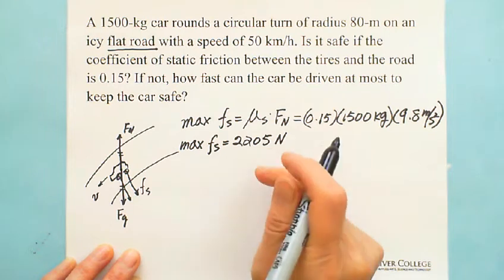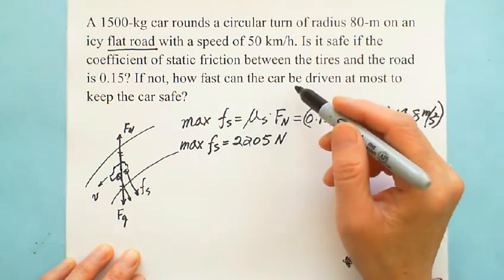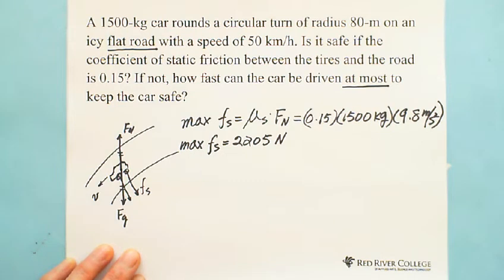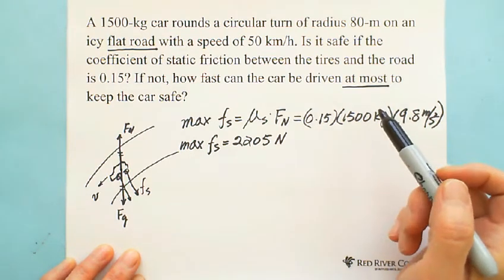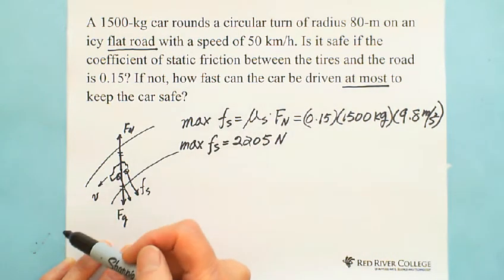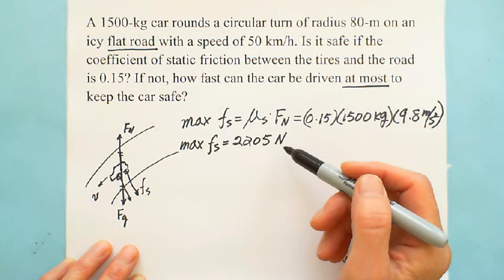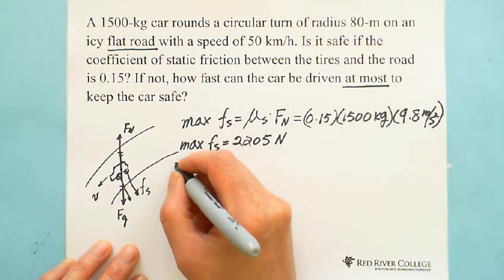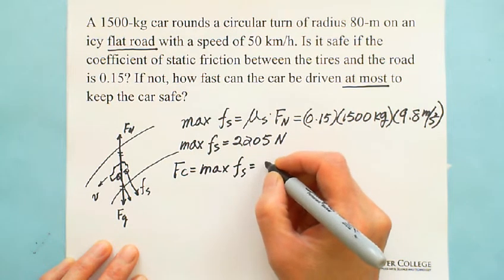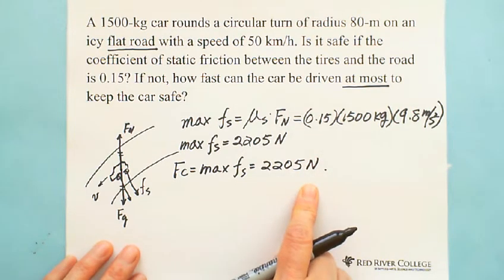The maximum static friction. And also, the maximum static friction in this situation, because they're looking for how fast can the car be driven at the most. They're looking for the maximum velocity, maximum speed, which is maximum static friction, which is equal to 2205 N. So that's why we use this one as centripetal force. So the centripetal force is the maximum static friction, which is equal to 2205 N. That's why we can use this information to find the velocity.